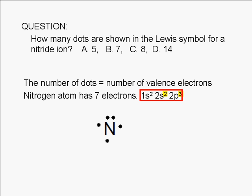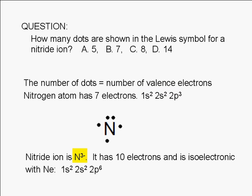But the question is asking for the Lewis symbol for the nitride ion, which has a charge of negative 3. A negative 3 charge means a gain of three electrons. 7 plus 3 is 10.